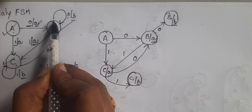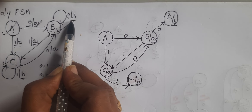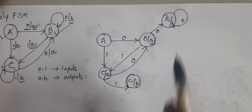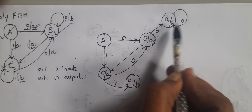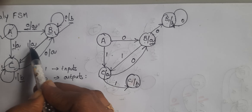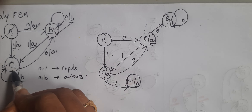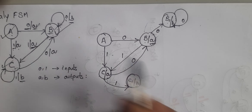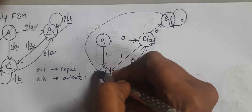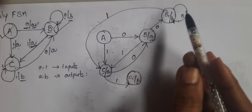For state b1, for input 0, it remains in the same state with output b. For input 1, the next state is c with output a. So draw the line for input 1 going to state c with output a.